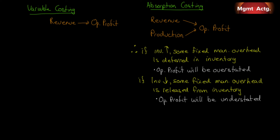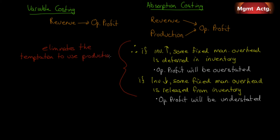Those who think that variable costing is superior take the point that the use of variable costing eliminates the temptation to use production to boost operating profit. So if we're facing a tough quarter, a production manager might say, 'I can make my numbers by making more units.' Yeah, we don't have a market for them, they won't sell, but I get to spread my overhead costs over more units. So whatever was sold will be sold at a lower cost of goods sold — it'll look like we have a higher gross margin, thereby goosing operating income. The other costs will just hide in inventory. By using variable costing, it eliminates that temptation.